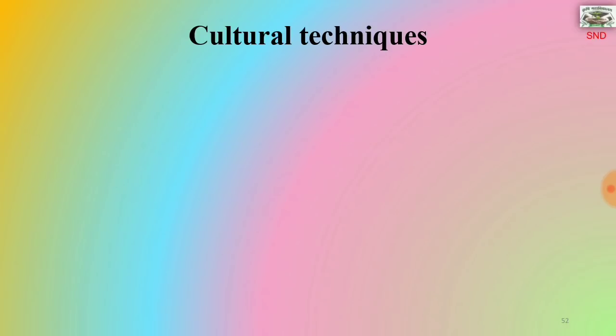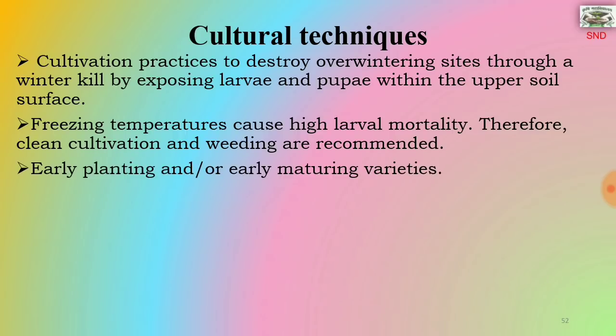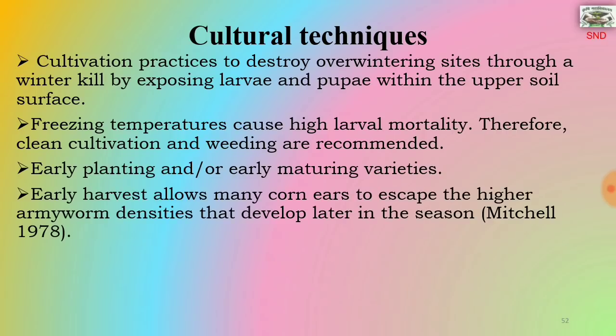Cultural techniques to be used: cultivation practices to destroy overwintering sites through a winter kill by exposing larvae and pupae within the upper soil surface. Freezing temperatures cause high larval mortality, so clean cultivation and weeding should be done. Early planting and/or early maturing varieties should be used. Early harvest allows many corn ears to escape the higher armyworm densities that develop later in the season.